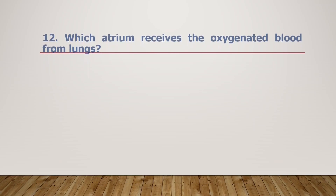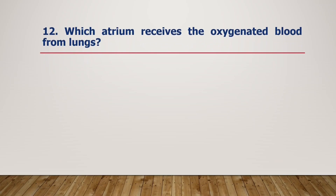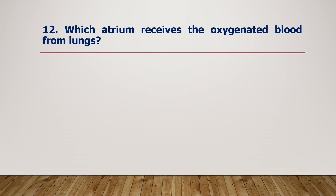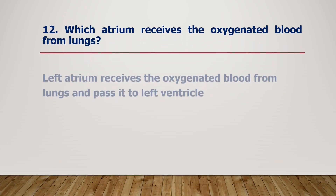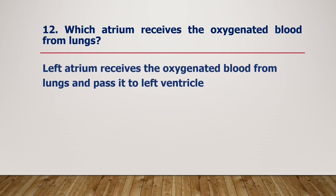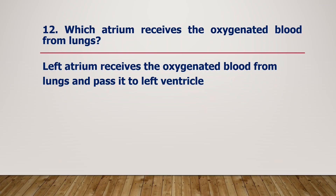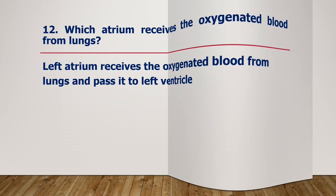Which atrium receives the oxygenated blood from the lungs? The left atrium receives the oxygenated blood from the lungs and passes it to the left ventricle.